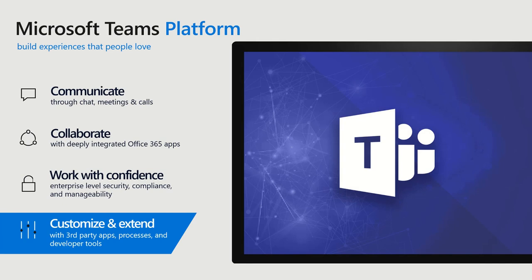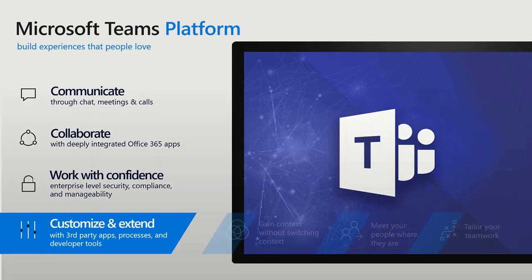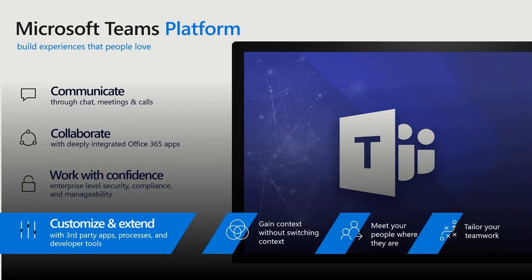Let's talk about the Teams platform. It's a key part of the overall product. There are a number of core pillars: communication, collaboration, enterprise-grade security and compliance, but also the ability to customize and extend through the use of third-party apps, tools, and services. With apps on the Teams platform, you provide users the ability to perform tasks and get things done without context switching, to bring content to where those end users are, and to really customize and tailor your teamwork.